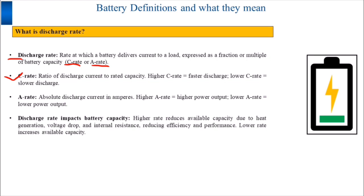For example, if a battery has a rated capacity of 100 amperes and a discharge current of 50 amperes, the C rate is 0.5C.